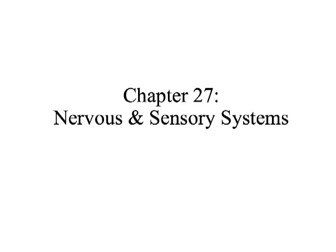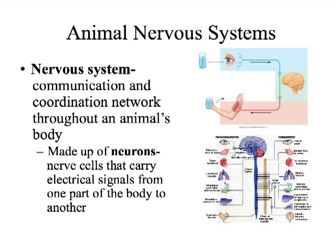The last chapter we're going to discuss in this course is chapter 27. In this lecture, we're going to cover the nervous system and the sensory systems. In animals, the nervous system is basically the communication and coordination network throughout an animal's body. It is how an animal takes in information, processes it, and then responds to that information. Nervous systems are made up of neurons, which are nerve cells that carry electrical signals from one part of the body to another.